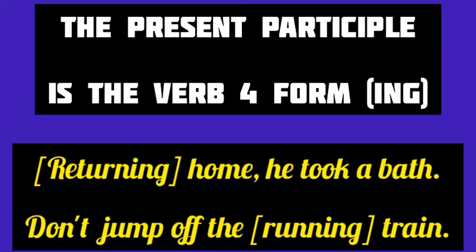Look at the second example. Don't jump off the running train. Here, running is the I-N-G or fourth form of the verb run. It is describing the noun train. In spite of being a verb, running is also acting as an adjective here. So, running is the present participle in the second example.